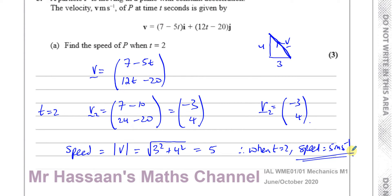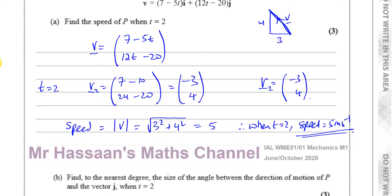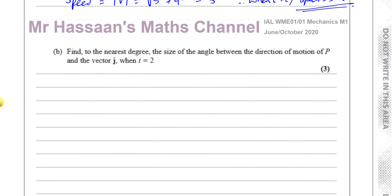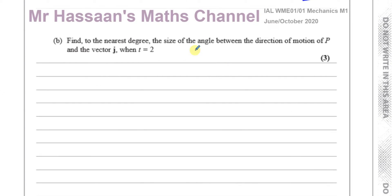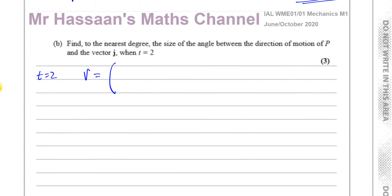And there we have the answer to part A. Now for part B — it says find, to the nearest degree, the size of the angle between the direction of the motion of P and the vector j when t equals 2. So when t equals 2, our velocity vector was (−3, 4).